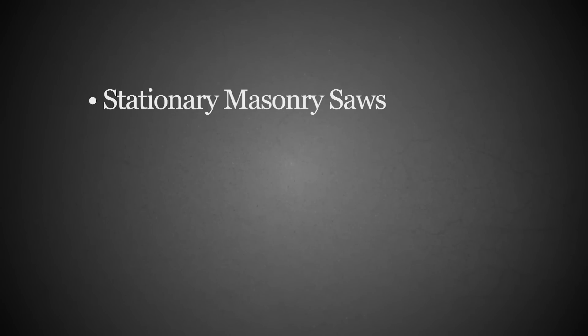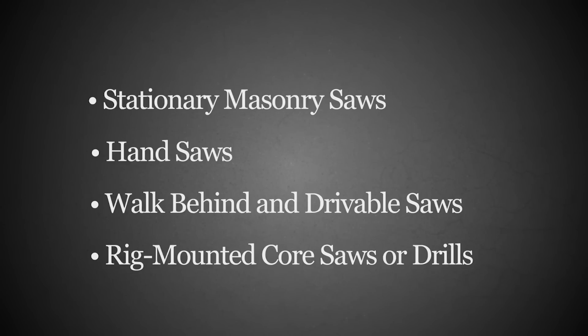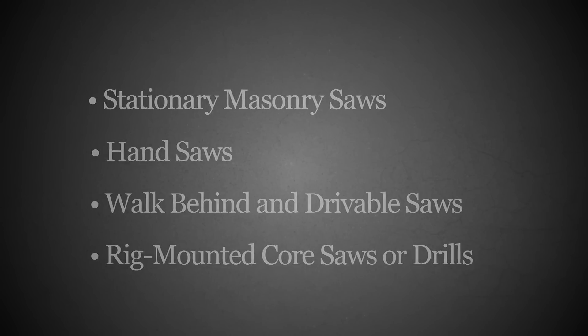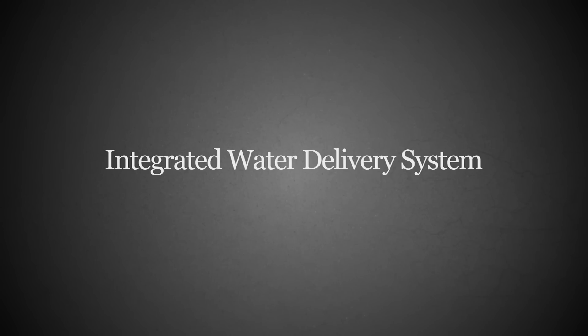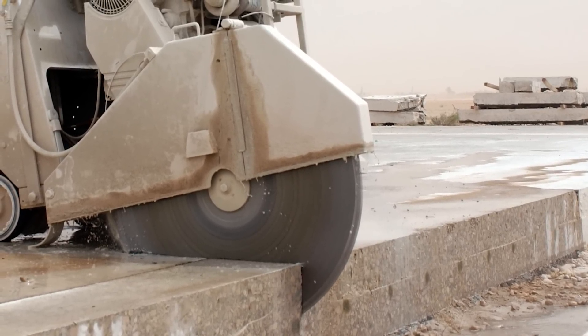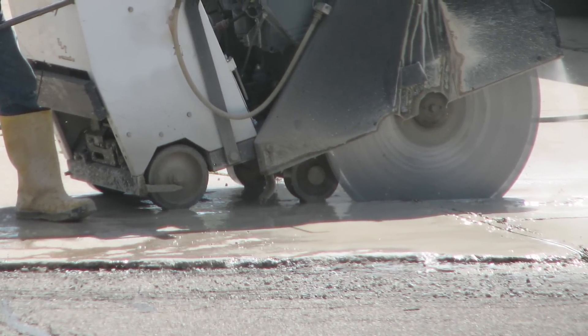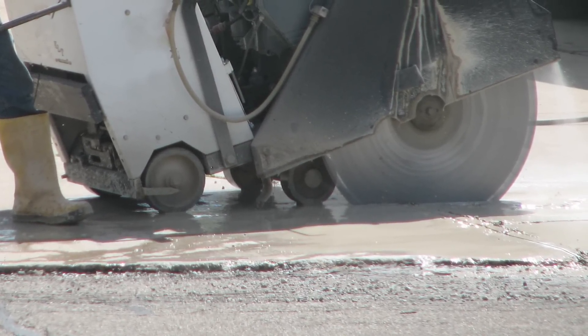For tools like stationary masonry saws, hand saws, walk-behind and drivable saws, rig-mounted core saws, or drills, Table 1 requires the use of a tool equipped with an integrated water delivery system that continuously feeds water to the blade or bit. This is almost always followed up with the instruction to operate and maintain the tool in accordance with the manufacturer's instructions to minimize dust emissions.